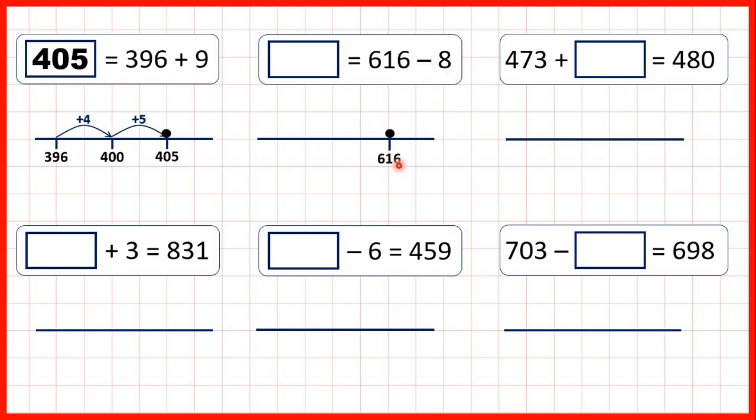If we subtract first of all our 6 ones, that takes us back to 610. But then, because we've subtracted 6 and want to subtract 8, we need to subtract 2 more. So that takes us to 608.